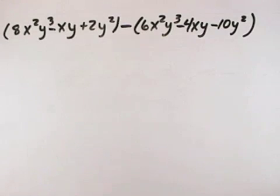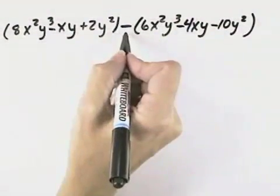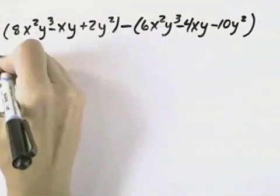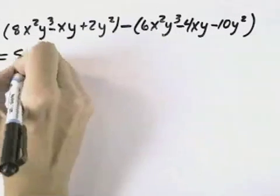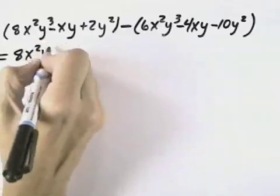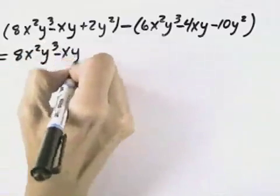Here we want to perform the indicated operation, which is subtraction of these polynomials. Since the first polynomial has nothing in front of it, we can drop the parentheses and just write down our terms.